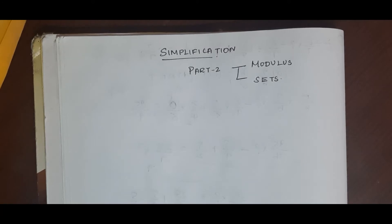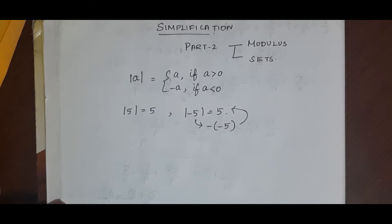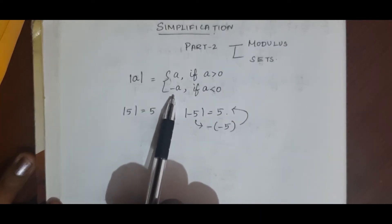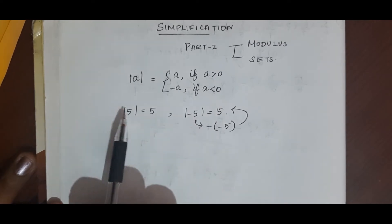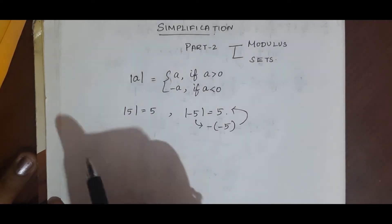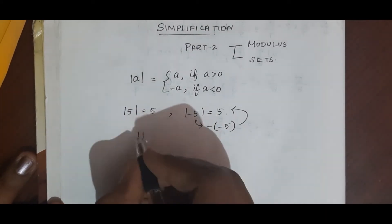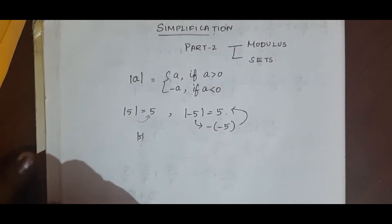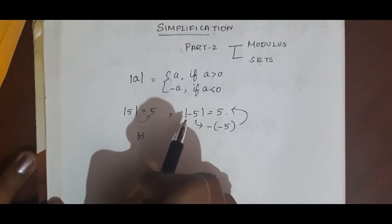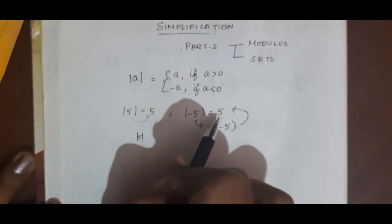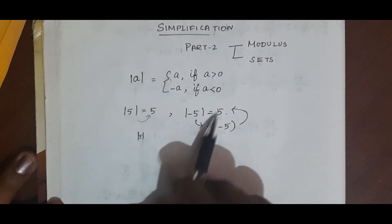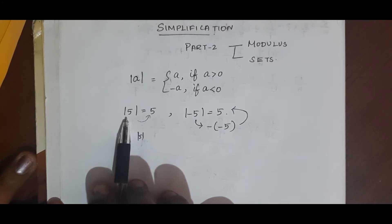It's very easy and it's just a matter of remembering a logic. If modulus of a is given and a is positive, that is the value is greater than 0, then a is the value. If a is negative, that is less than 0, the value of modulus is minus a. If a positive value like 5 or 6 is given inside the modulus, it implies the value is positive — it's 5. If a negative value is inside the modulus, we write it as positive: minus of minus 5 is written as 5. This is the basic of the modulus problem, and it is important in most competitive exams, so please remember this.